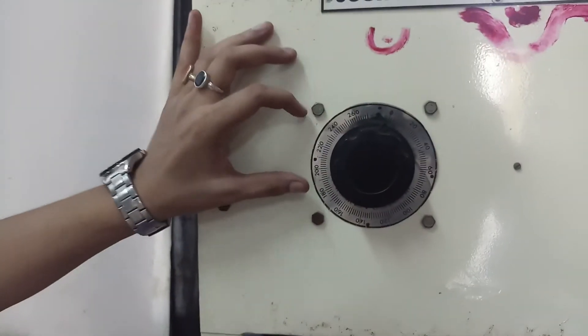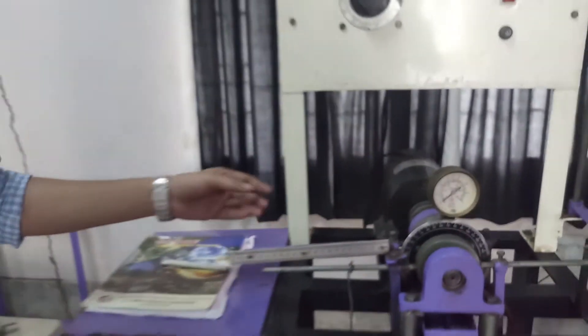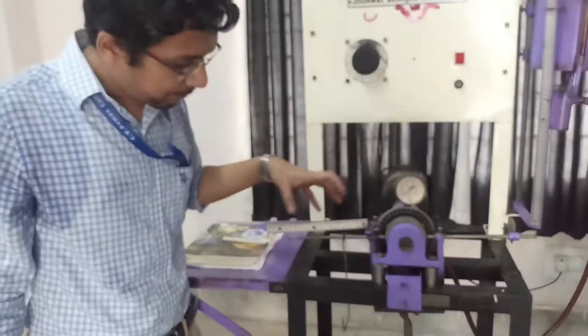This knob is used to adjust the voltage of the motor so that the RPM can be changed. These are the elementary parts of this apparatus.